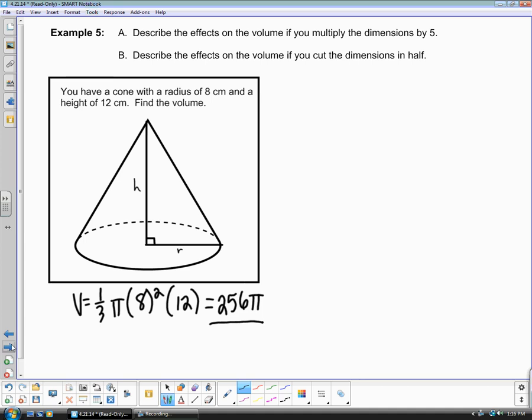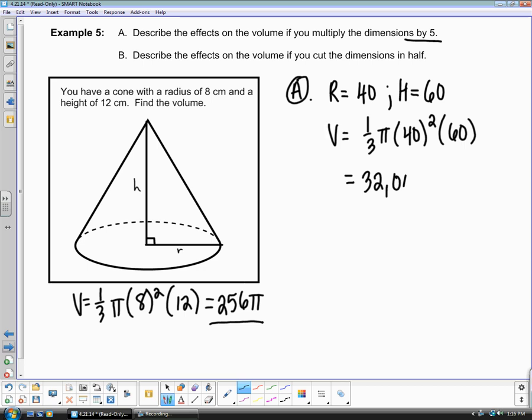You should get a volume of 256 pi. So in the first part, part a, they're asking you to multiply the dimensions by 5. So my new radius is now going to be 40 and my new height is now going to be 60. So now calculate the volume. You should get 32,000 pi. Now let's go ahead and compare these values. If we knew that the original cone had a scale factor of 1, so that was the original, and then we wanted to go to this part a, we're multiplying by 5. So from the smaller, the original, to the new cone, that scale factor is going to be 1 fifth.